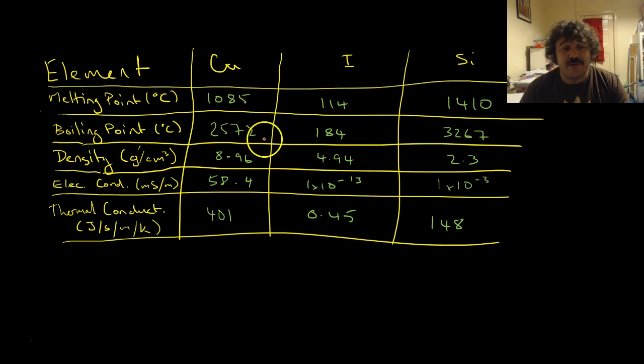Boiling point, again, says big difference between the metal and the non-metal. The semi-metal is actually higher up there. It's even higher than this metal.